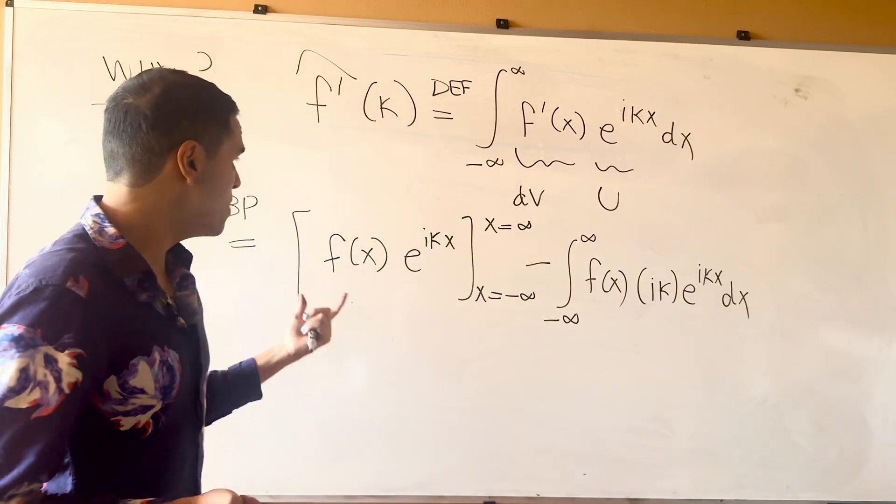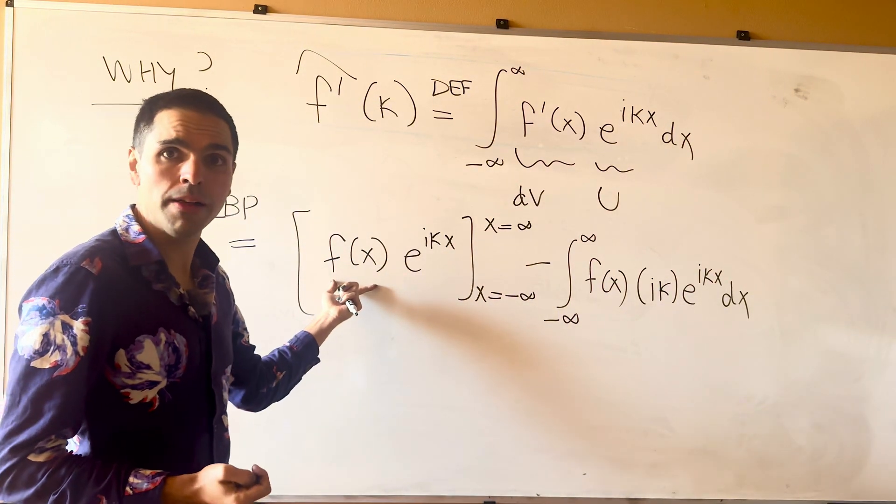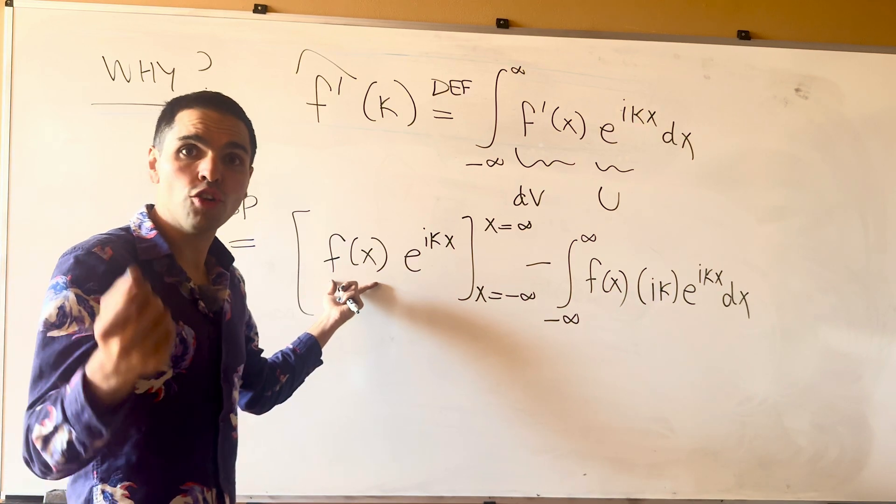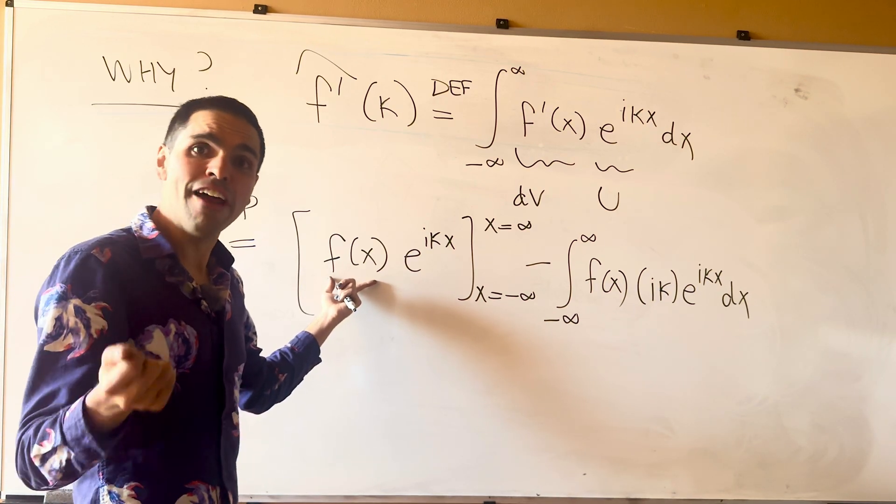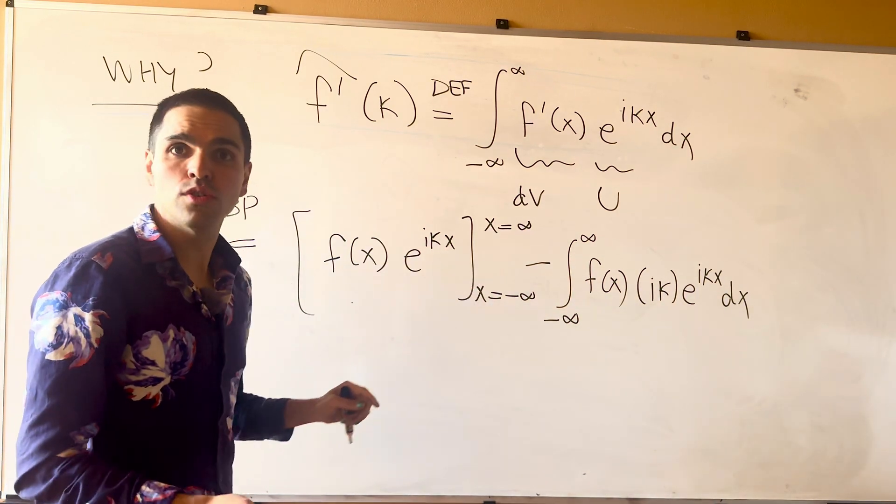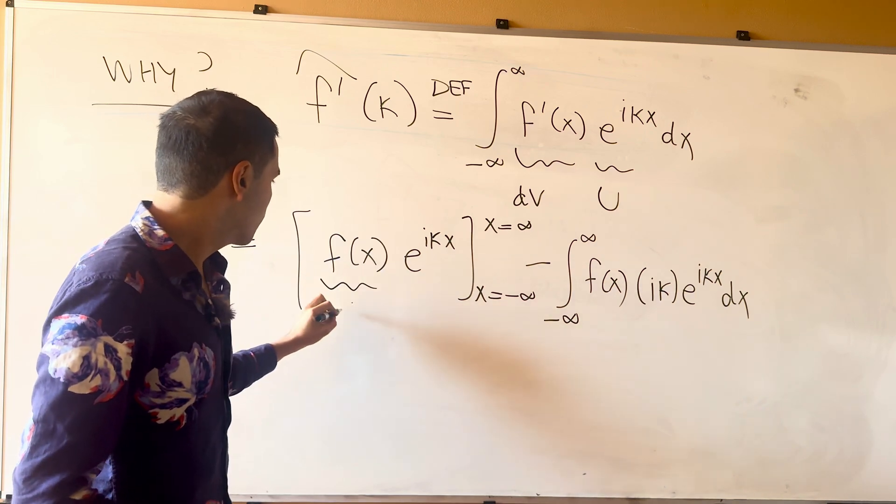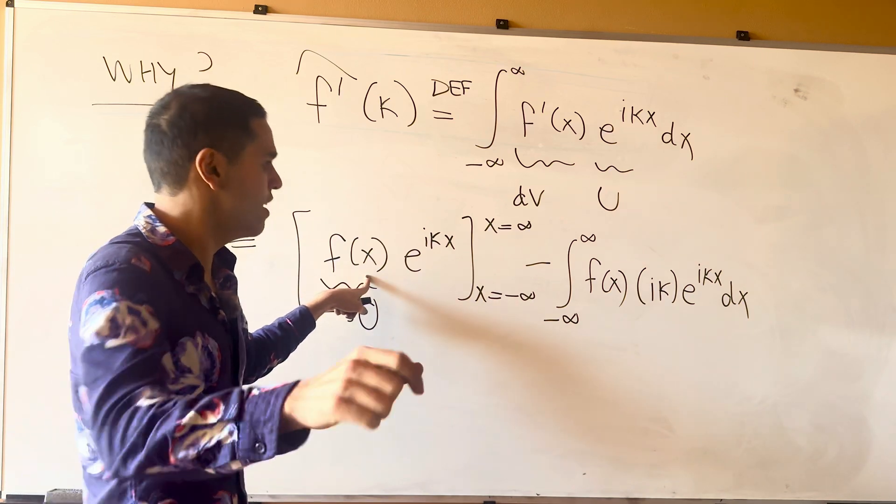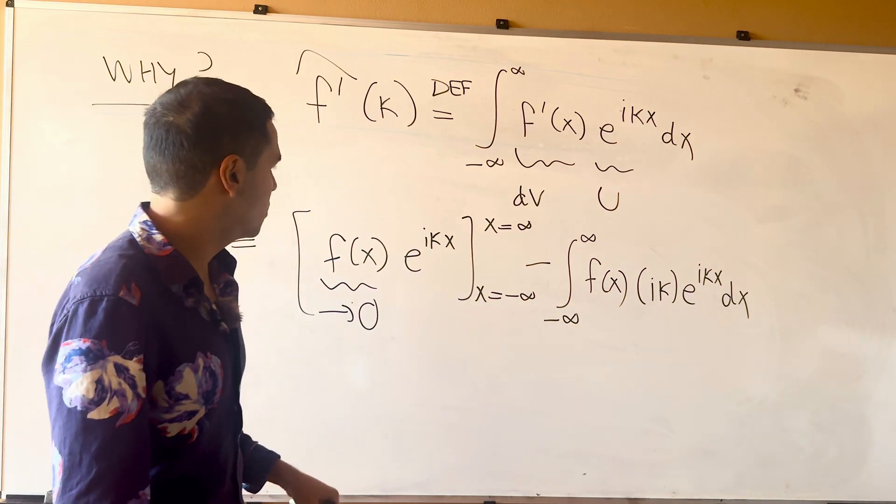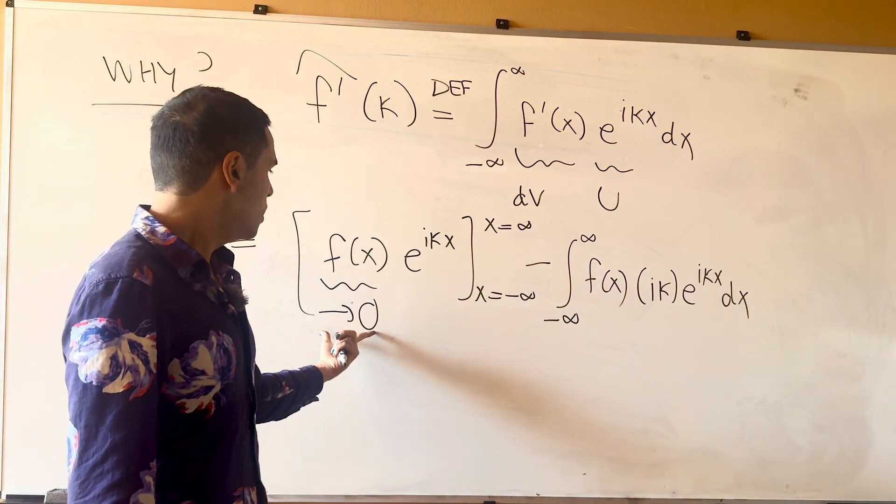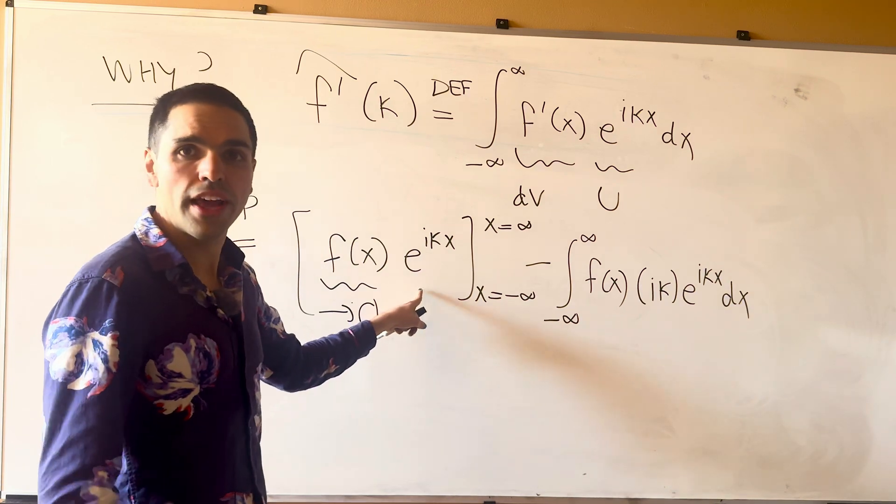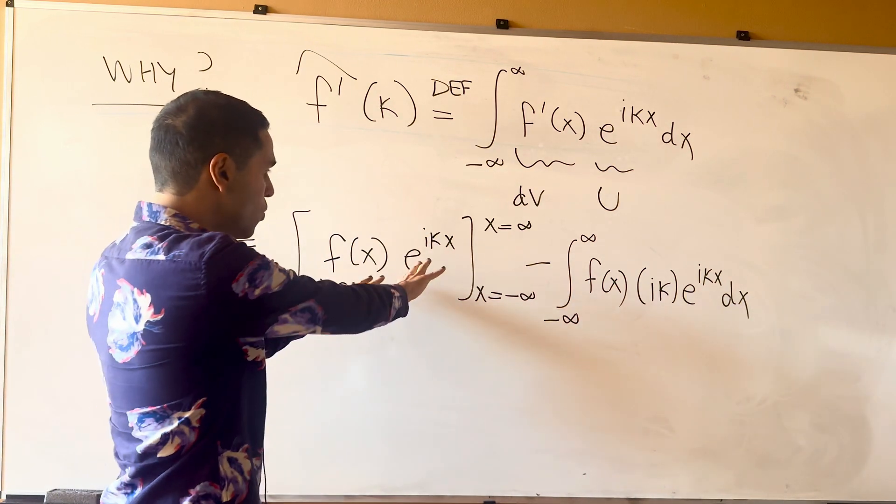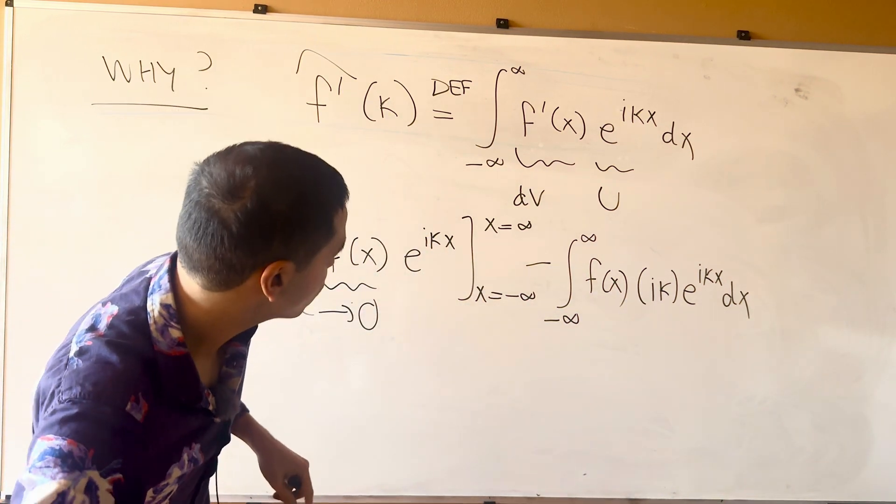Now, remember, a main assumption in those problems, we assume f goes to 0 very fast, as x goes to plus minus infinity. So this is sometimes called the Schwarz function, a function that goes to 0 very, very fast, at plus minus infinity. So since this goes to 0, and this is bounded, we can assume that the whole thing goes to 0.